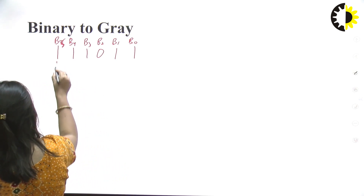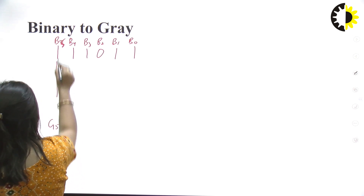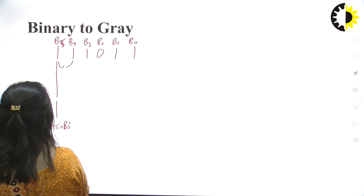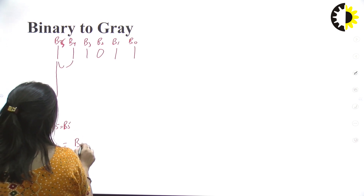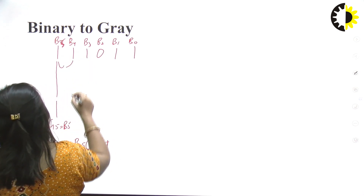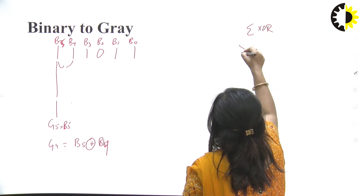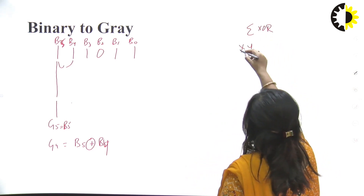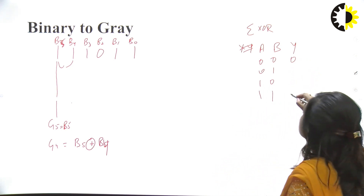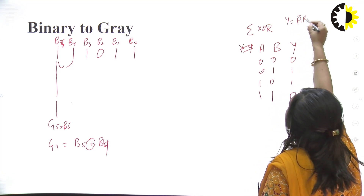For writing gray code, we write the first number as it is: G5 is equal to B5. Then we find the XOR of B5 and B4. The truth table of the XOR gate has inputs A and B and output Y: 0,0→0; 0,1→1; 1,0→1; 1,1→0.